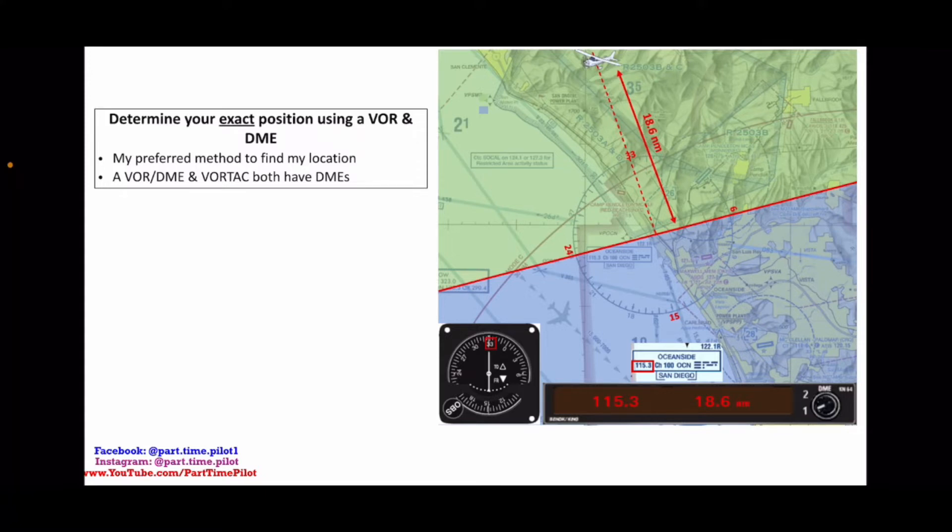This is my preferred method to find my location. It's easier than dialing in two different VORs, making sure they both work, listening to both Morse codes, and drawing the lines on your map. This is much easier. A VOR DME and a VORTAC both have DMEs, so you just need to find a VOR station on your map that you're nearby that is either a VOR DME or a VORTAC.